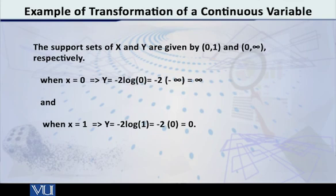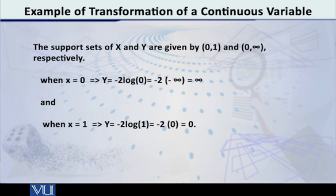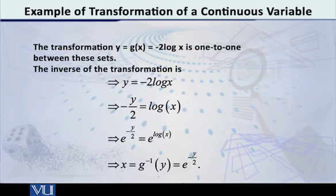So the interval — we don't say it is infinity to 0, but the support of the new variable y is straightaway 0 to infinity, that is, the positive half of the real line. The entire real line extends from -∞ to ∞, and the density of this new function will be defined on 0 to infinity.